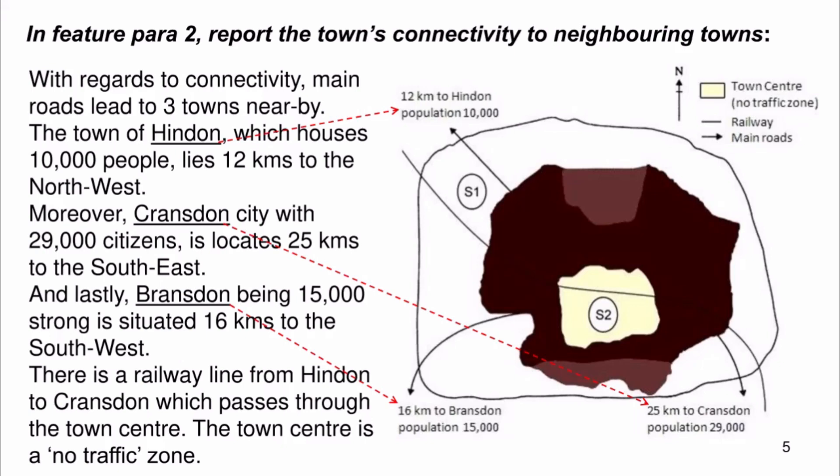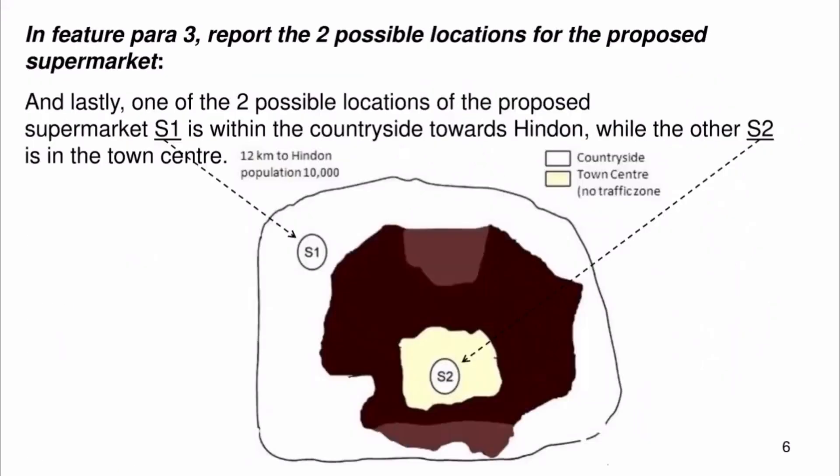The town center is a no traffic zone. In feature para 3, report the two possible locations for the proposed supermarket. One of the two possible locations, S1, is within the countryside towards Hinden, while the other, S2, is in the town center.